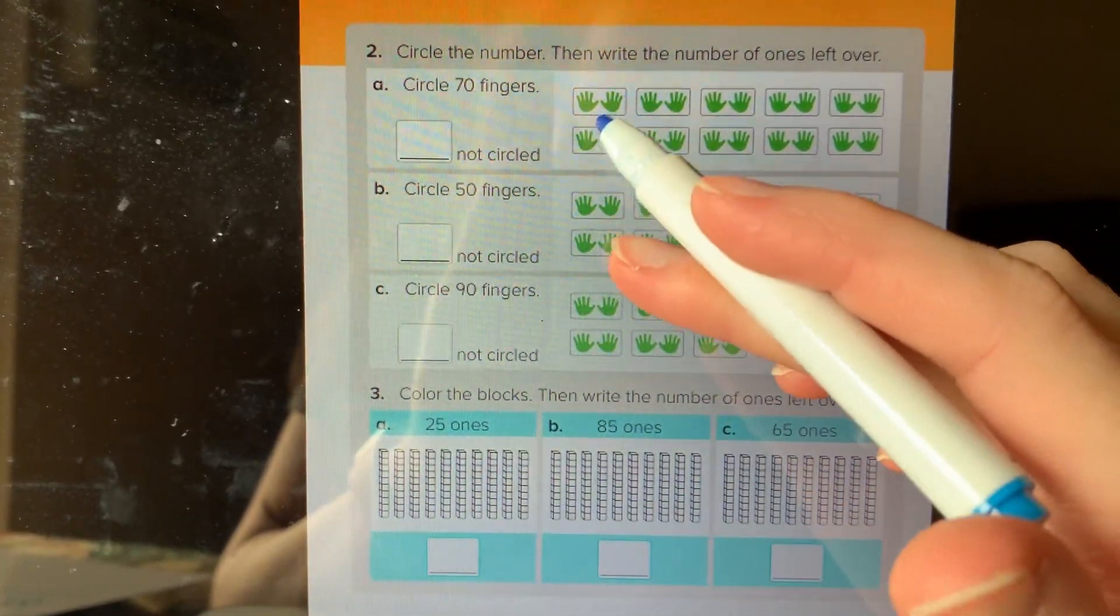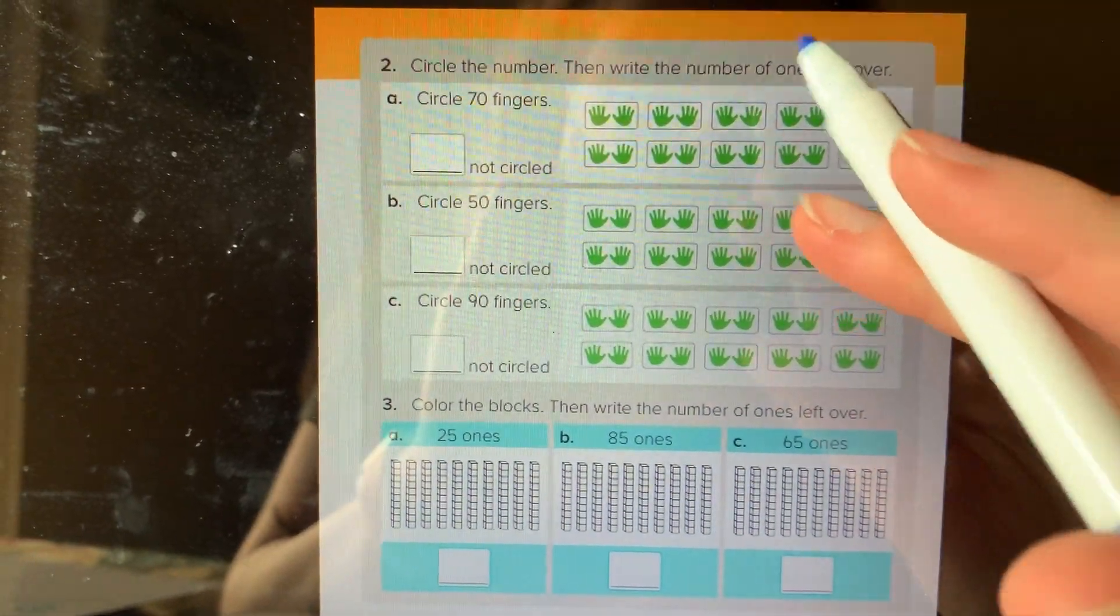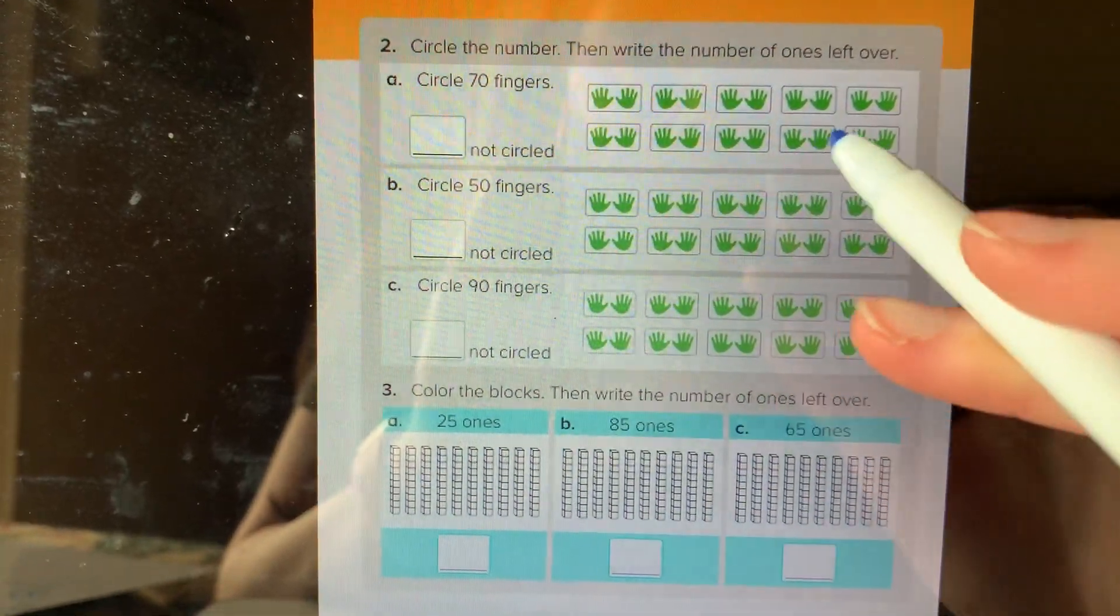So if we count by 10s: 10, 20, 30, 40. If we count all these we should get all the way up to 100.